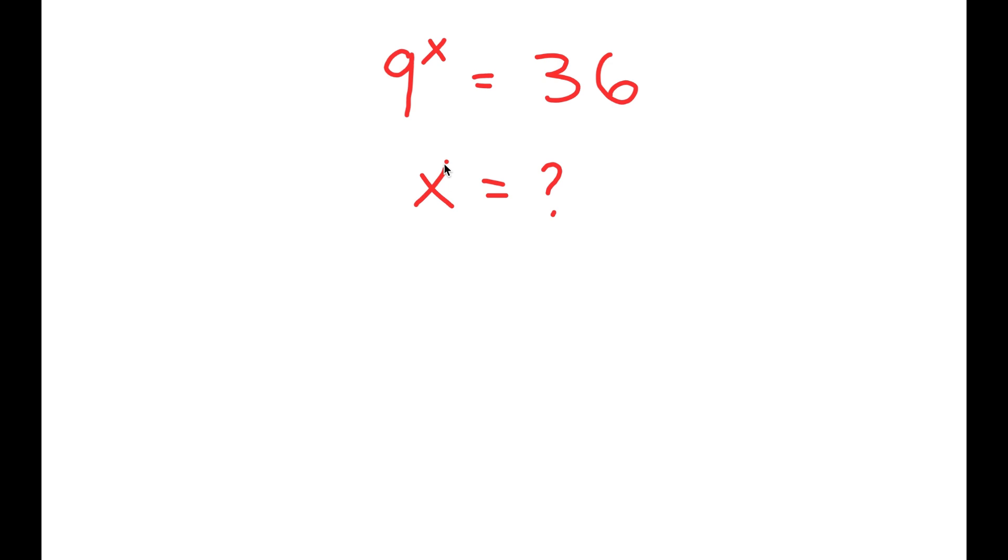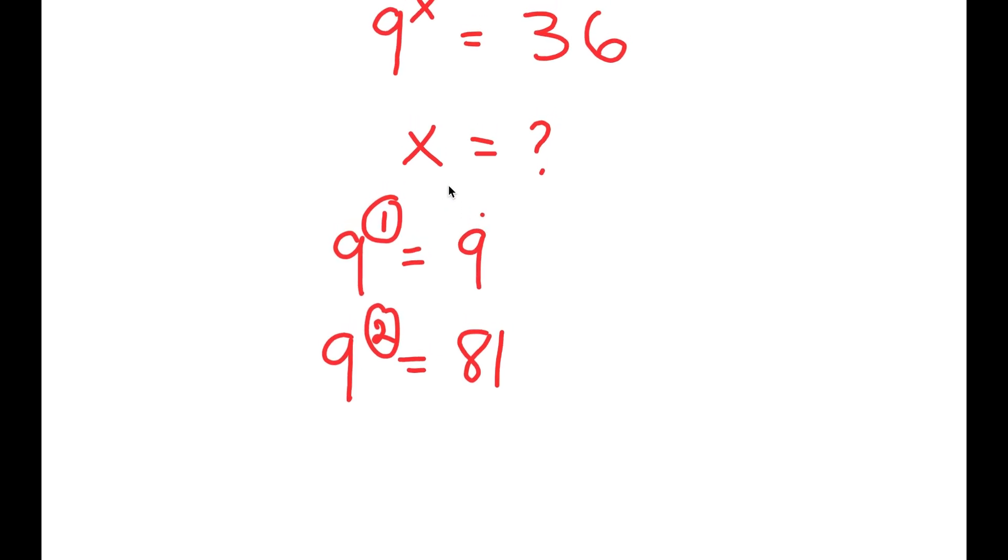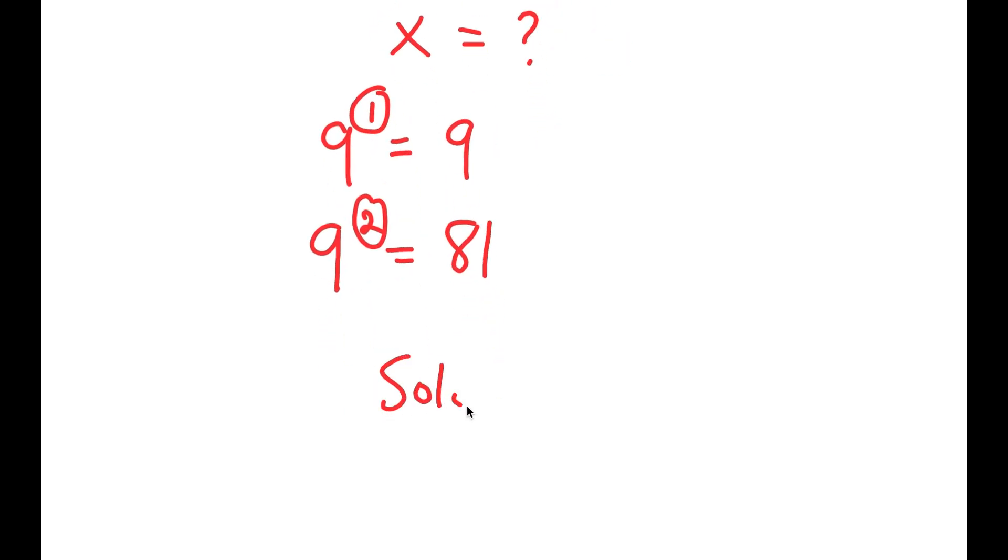And we can already tell that x is not going to be a whole number, because 9 to the power of 1 is 9, and 9 to the power of 2 is 81. So we know that x is going to be somewhere in between 1 and 2. So we want to find the exact value of x.